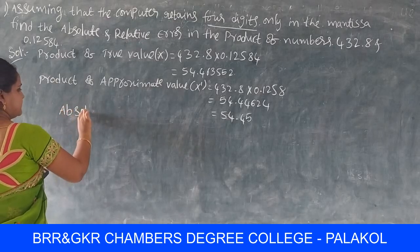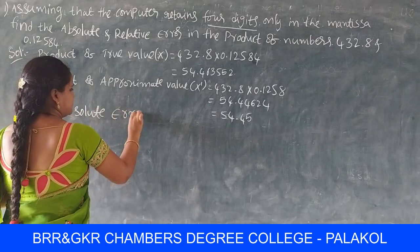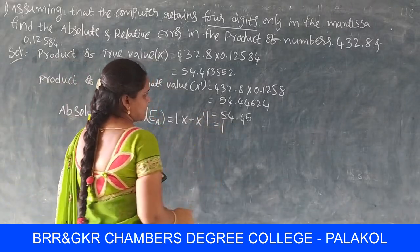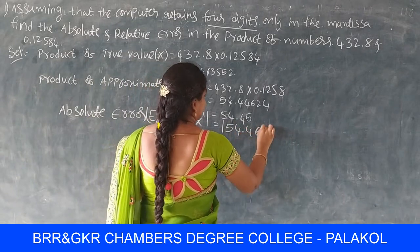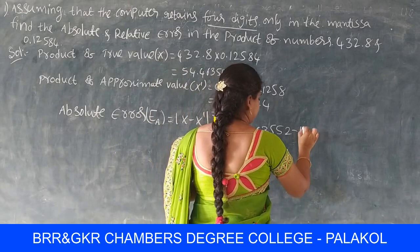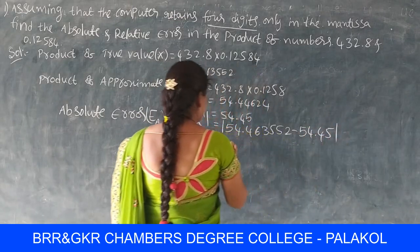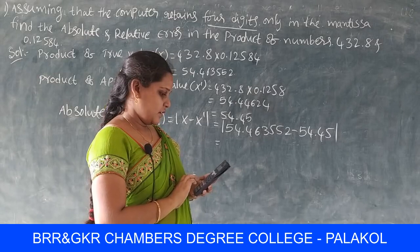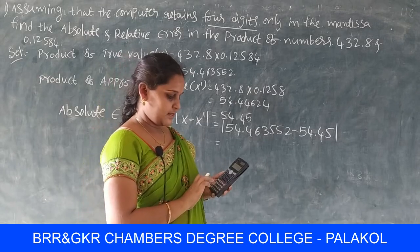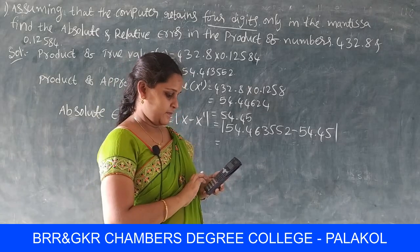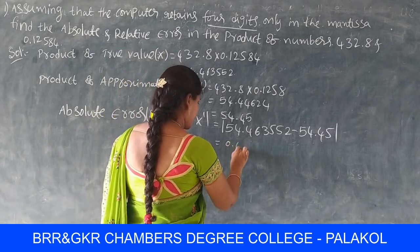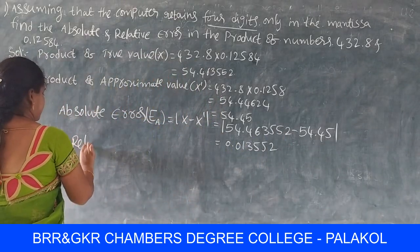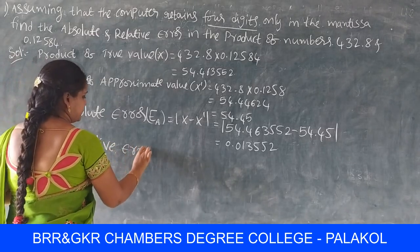Now find the absolute error. Absolute error Ea = |X − X'| = |54.463552 − 54.45|. Calculating using the Casio, this equals 0.0133552.